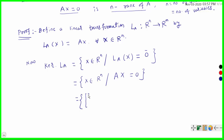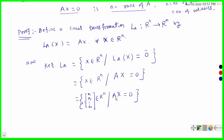So this is equal to the column vector (x1, x2, ..., xn) belonging to Rn such that A times this capital X is equal to 0. And this capital X — the ordered n-tuple — is a solution of the system of homogeneous linear equations; a set of linear equations in n unknowns x1, x2. If A is an m by n matrix, then this is a homogeneous system of m linear equations in n unknowns.